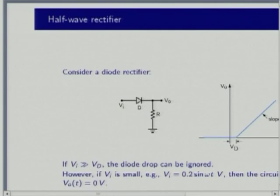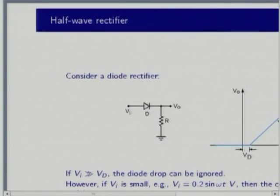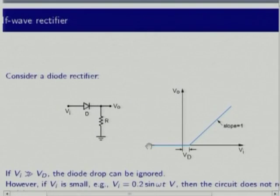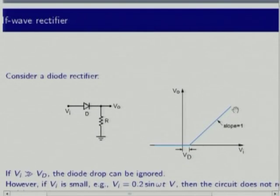Before we go to precision rectifiers, let us see what an ordinary diode can do as a rectifier. Let us take a simple half-wave rectifier. If this diode conducts, V_O is just V_I minus about 0.7 volts, giving a straight line with an intercept of 0.7 volts - the turn-on voltage - and a slope of 1. When V_I is less than 0.7, there is no conduction and the output voltage is 0.